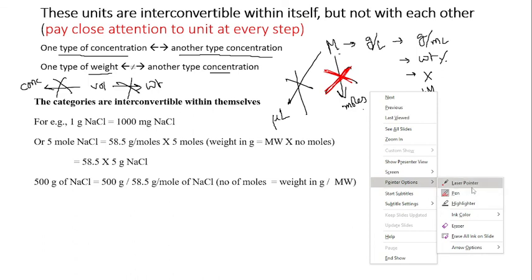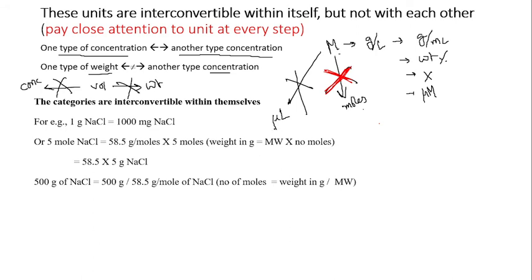For units that are interconvertible within the same parameter, here is how conversion works. For example, one gram of NaCl equals one thousand milligrams of NaCl. On a more difficult side, five moles of NaCl can be converted to grams — and that is where molecular weight comes in.